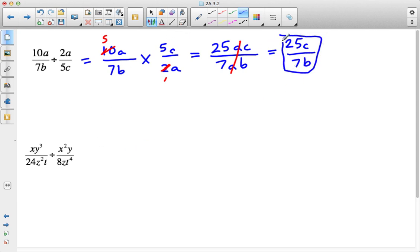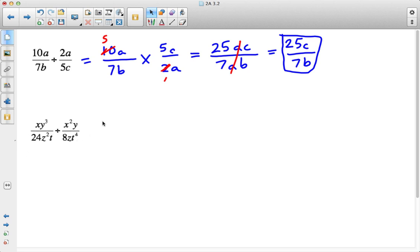25 and 7 are not divisible by any common term. So we're going to go ahead and move on to the next. Alright. xy³/24z²t divided by x²y/8zt⁴. Again, if you want to try this on your own, you're more than welcome to do so.